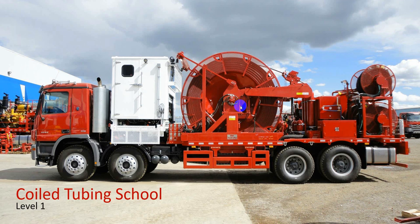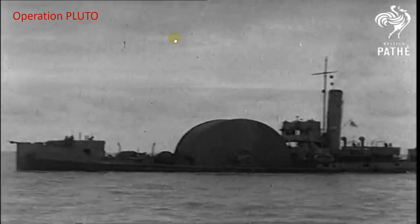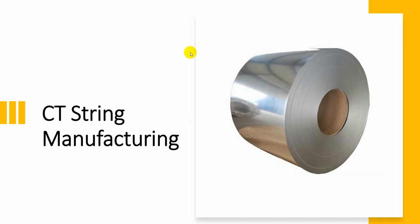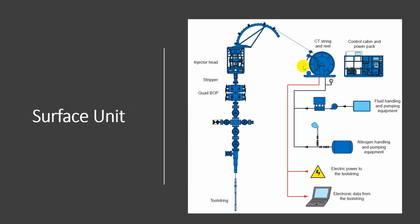Good evening everyone, this is Coiltube School level one, part two. If you haven't seen the previous video, please watch it. In the previous video we talked about the history of coiltube, how it was first made through all of these inventions till current coiltube, and we also talked about manufacturing — the process we use to convert a sheet of metal into a round pipe coiltube. Then we talked about surface units and the coiltube reel.